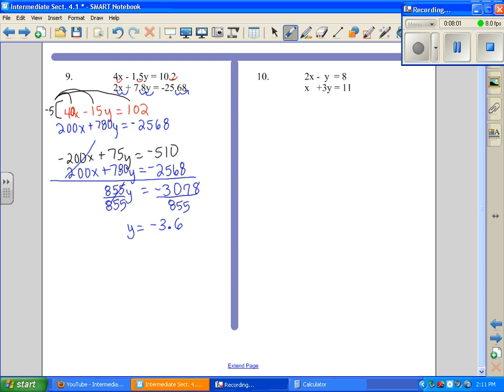We know our y value. Now we need to substitute back into one of the original equations and find our x. I'm going to go back into original equation 1, which is 4x minus 1.5y equals 10.2. Make sure it's your original. Now I'm going to substitute this in place of y: 4x minus 1.5 times negative 3.6 equals 10.2. Negative 1.5 times negative 3.6 is positive 5.4.